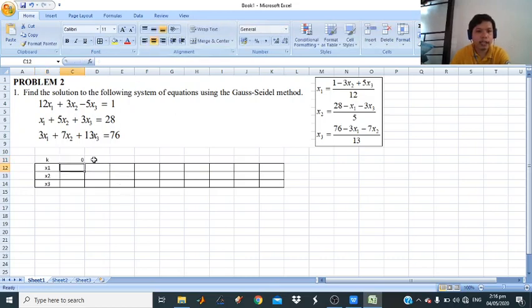So for your initial guess, or initial iteration, you will use, let's say, 1, 1, and 1.